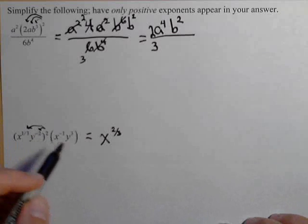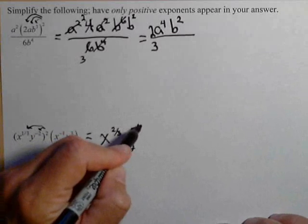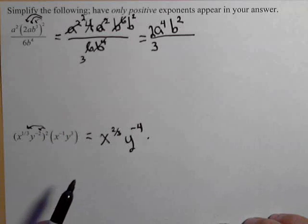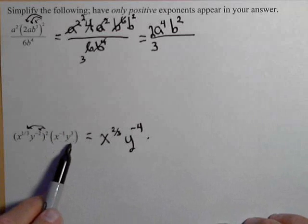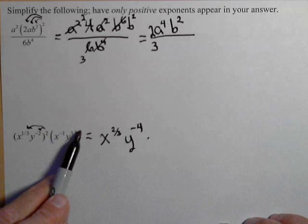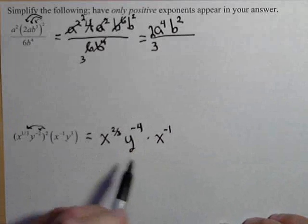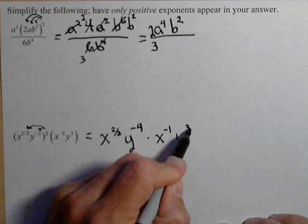And then y to the negative two squared, or y to the negative fourth. Now we can leave out those parentheses. We have parentheses on this second term, but just an exponent of one, so that's x to the minus one, y cubed.